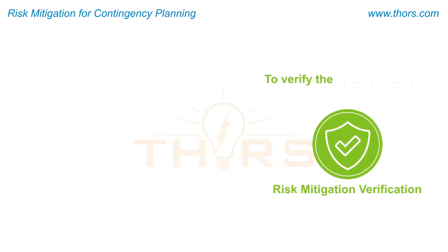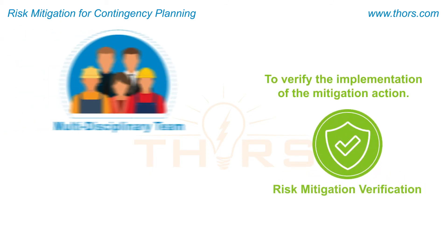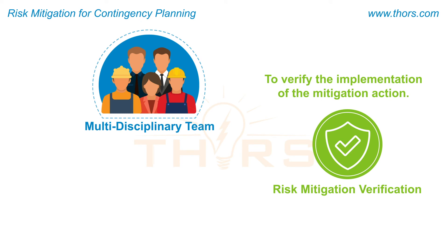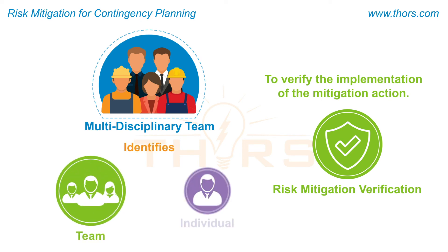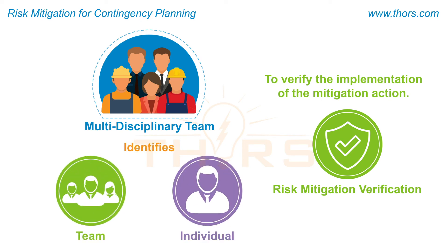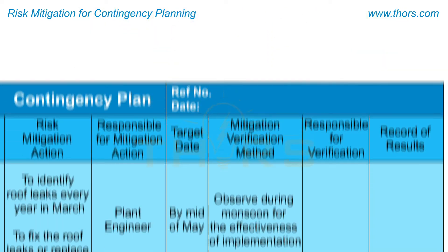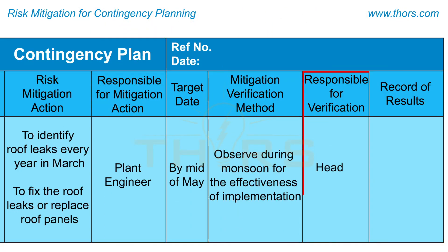To verify the implementation of the mitigation action, the multidisciplinary team identifies the team or individual. For the leaking roof example, the head of production is assigned with the responsibility.